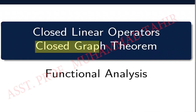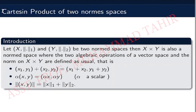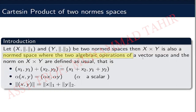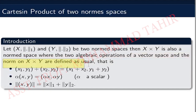Today's topic is closed graph theory. First we see the Cartesian product of two normed spaces. Let X with norm 1 and Y with norm 2 be two normed spaces. Then X cross Y is also a normed space where the two algebraic operations of a vector space and norm on X cross Y are defined as usual. We know that the Cartesian product of X and Y is also a normed space.